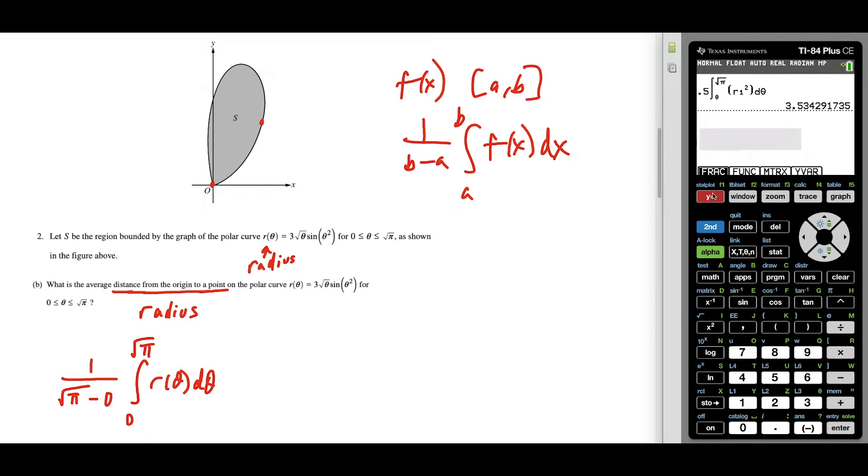So we just have to type this in now. And we'll do alpha y equals enter to type in a fraction. And I've got one over the square root of pi minus zero is just square root pi. So I get this. And now my integral I'm pressing math nine, I'm going from zero to square root pi. And then the rest of this here, I just type in r one again, and that's vars, right arrow, polar is number three, and then y one. You could just type it in every single time. But I find just typing it in once in the y equals saves you a lot of time because you're probably gonna have to use that function more than once.